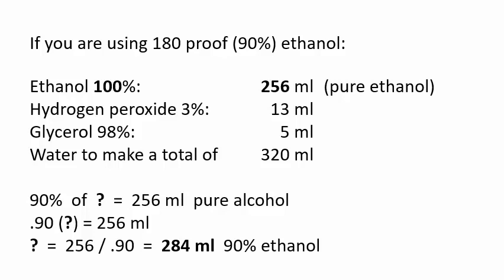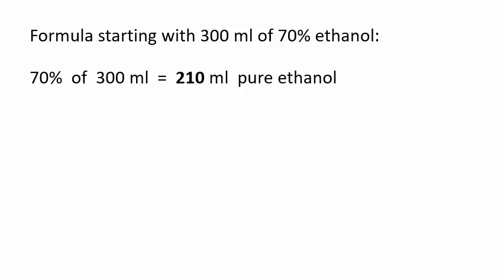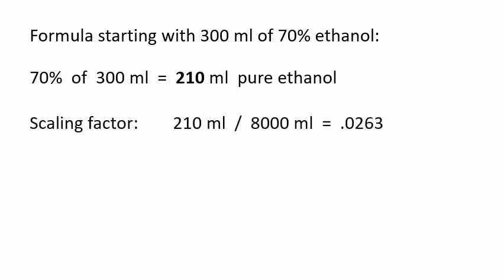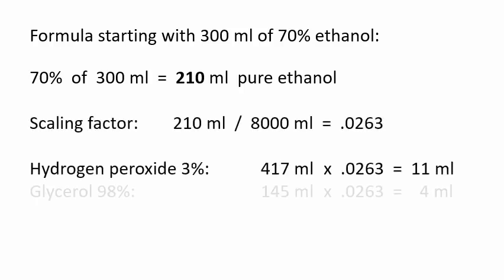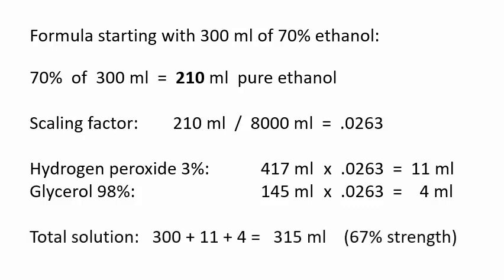If your ethanol strength is 80% or less, add only hydrogen peroxide and glycerin and do not add any water. This example shows how to start with 300 milliliters of 70% ethanol and calculate how much of the other two ingredients to add. The final hand sanitizer alcohol content is 210 divided by 315, or 67%.